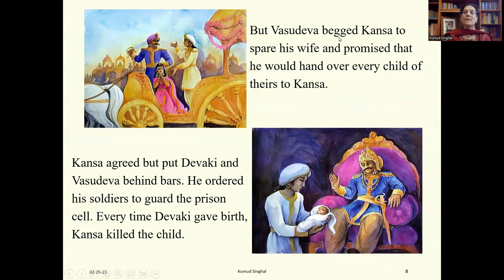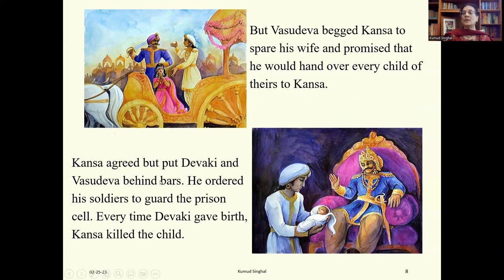But Vasudeva begged Kanz to spare his wife and promised that he would hand over every child of theirs to Kanz. He said, 'Please do not kill my wife — we will give you all our children.' Kanz agreed, but put Devaki and Vasudeva behind bars and ordered his soldiers to guard the prison cell. Every time Devaki gave birth, Kanz killed the child. Vasudeva, with a sad face, used to bring all his children to Kanz.